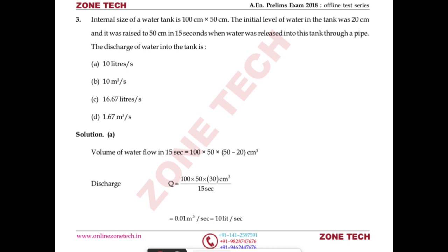The water tank size and initial depth of water are given. Water is supplied through a pipe, and in 15 seconds the water level raised to 50 cm. We need to find the discharge. To do that, we calculate the volume of water that increased in 15 seconds.